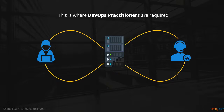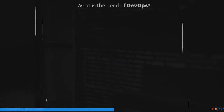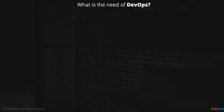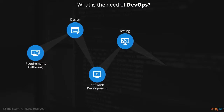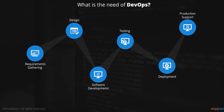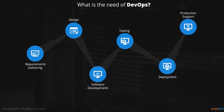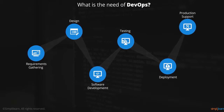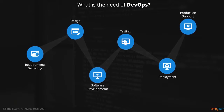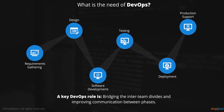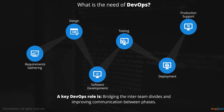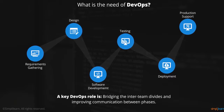This is where DevOps practitioners are required. The software development lifecycle is complex and has a number of important phases, including requirements gathering, design, software development, testing, deployment, and production support. Traditionally, these phases have been performed by individuals and teams who have very little interaction with each other. A key DevOps role is bridging the inter-team divides and improving communication between phases.